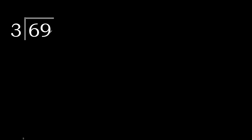69 divided by 3. Here 6 is not less, therefore 6. 3 multiplied by which number is nearest to 6 but not greater? 3 multiplied by 3 is 9 — 9 is greater. 3 multiplied by 2 is 6, is not greater. 6 minus 6 is 0.